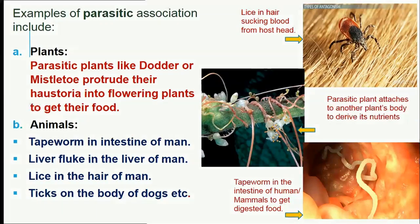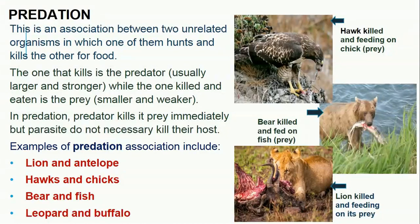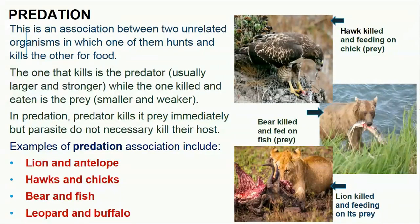The next type of association is predation. This is an association between two unrelated organisms in which one of them hunts and kills the other for food. The one that kills is the predator and is usually larger and stronger, while the one killed and eaten is the prey and is usually smaller and weaker. In predation, the predator kills its prey immediately, but in parasitism the parasite does not necessarily have to kill the host immediately. Examples of predation include lion and antelope, hawks and chicks, bear and fish, and leopard and buffalo.